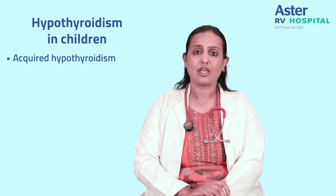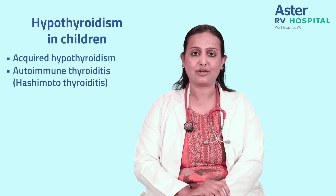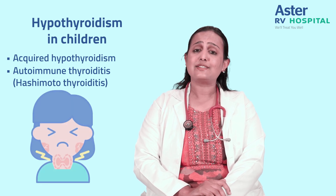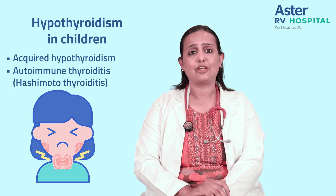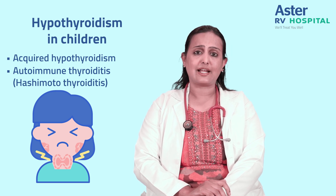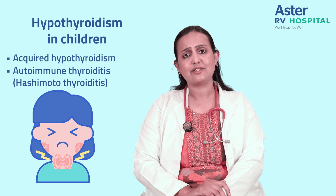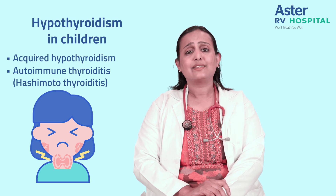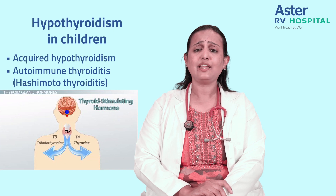The most common cause of acquired hypothyroidism is autoimmune thyroiditis, also called Hashimoto's thyroiditis. In this condition, the body's immune system mistakes the thyroid gland for a foreign pathogen like a bacteria or virus and starts attacking it. Over time, this attack damages the thyroid gland, causing it to produce lesser and lesser quantities of thyroid hormones. When hormone levels become low, the pituitary gland in the brain detects this and produces TSH — thyroid stimulating hormone.